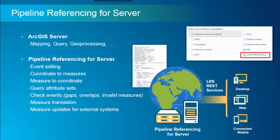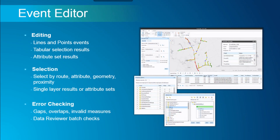For Pipeline Referencing for Server, some capabilities can be exposed at the web service level, including event editing and coordinate-to-measure translations. We provide QAQC tools like the check events tool at the server level. If the organization is working with an enterprise geodatabase, we provide REST endpoints to create version, delete version, reconcile, and post — all available through the LRS services.